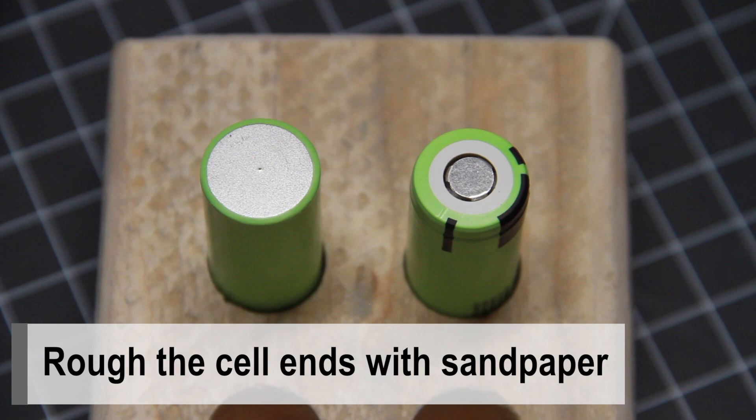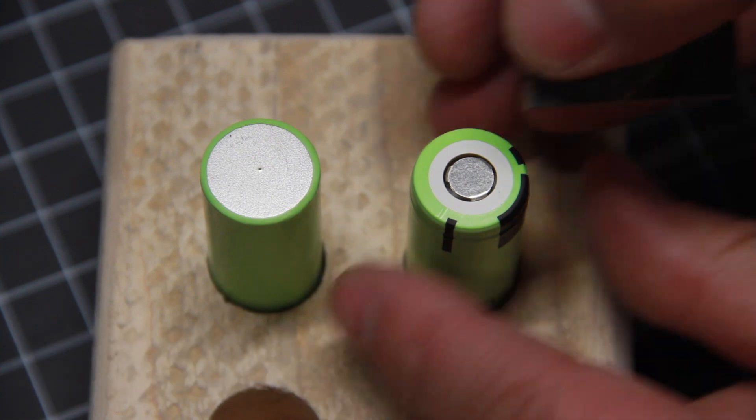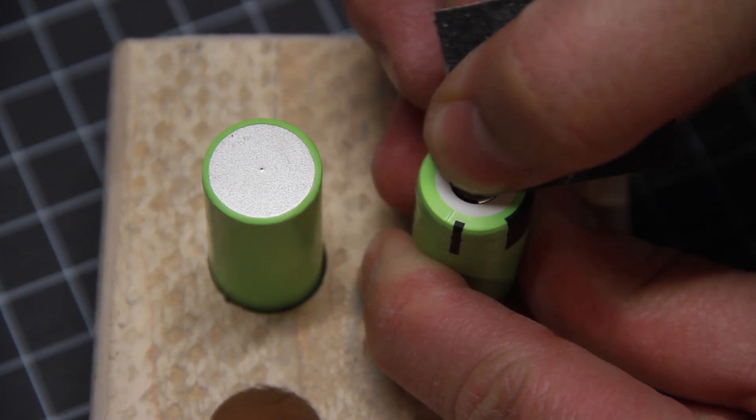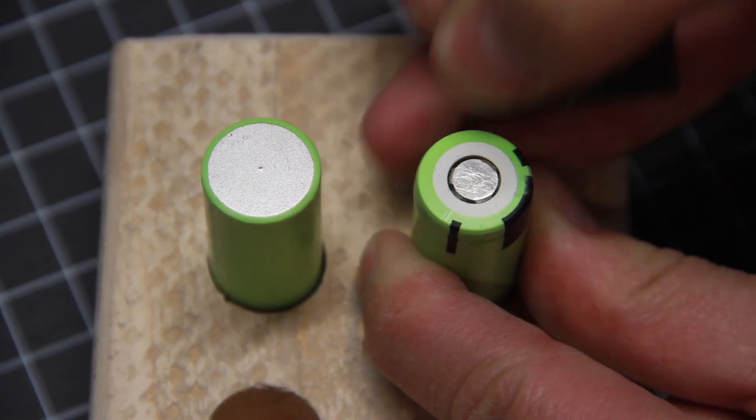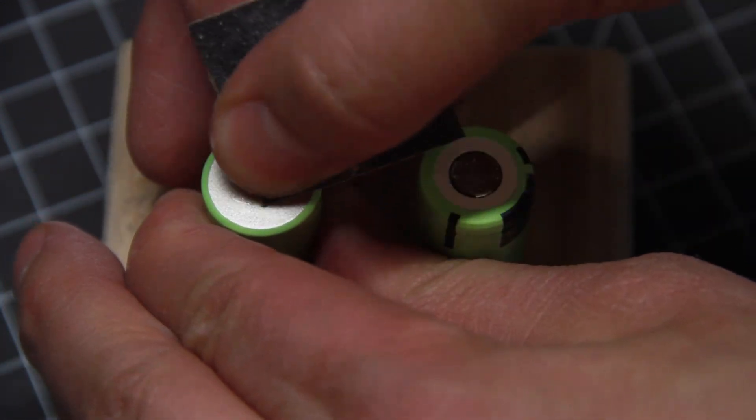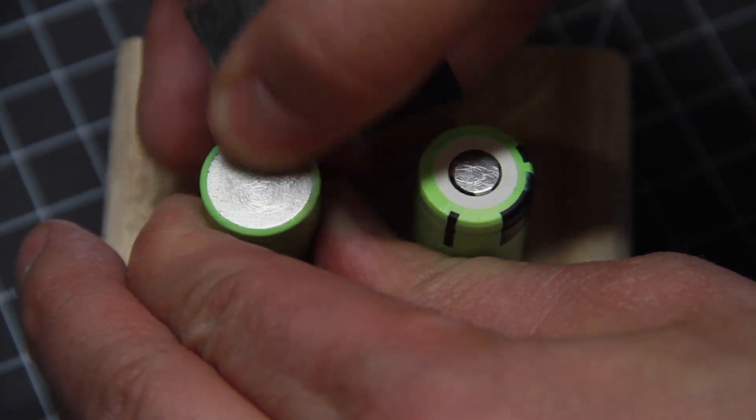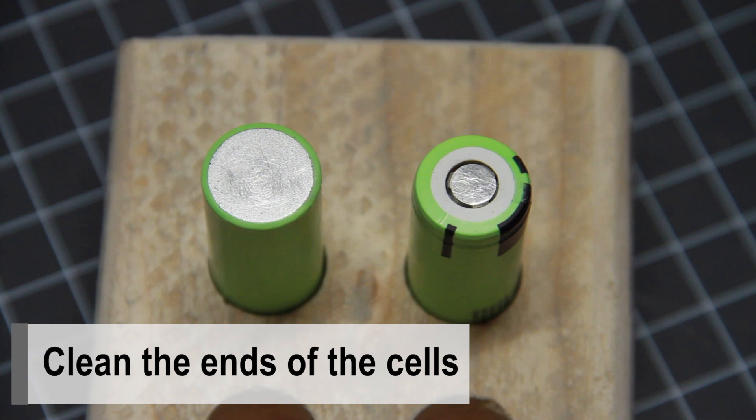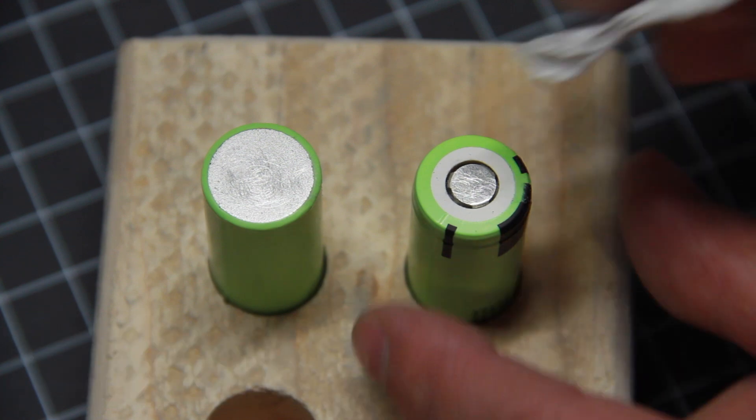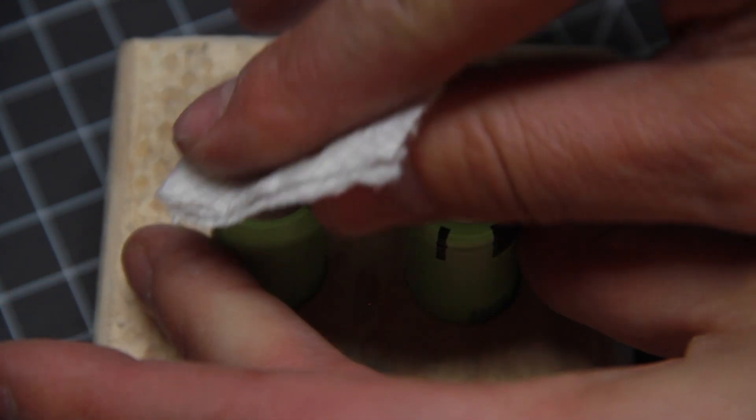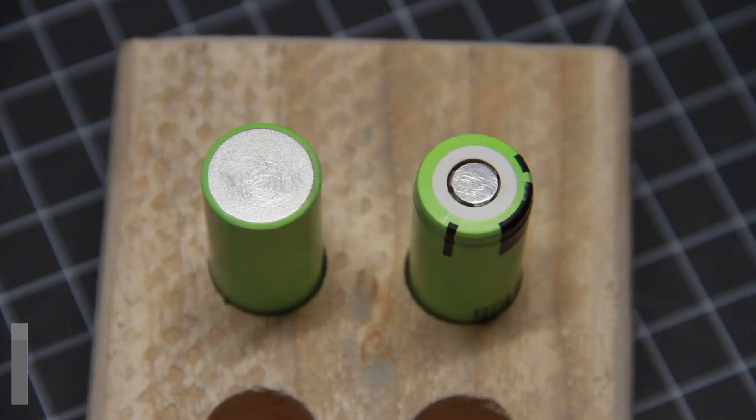Rough the cell ends with sandpaper. Clean the ends of the cells. Apply flux.